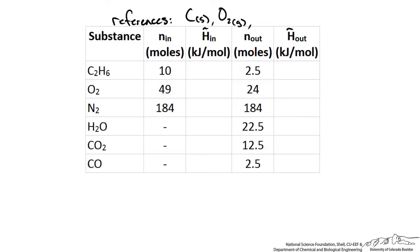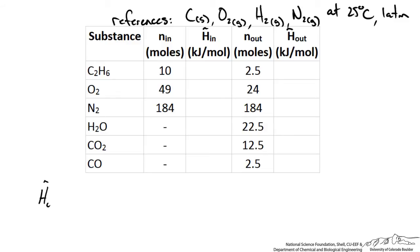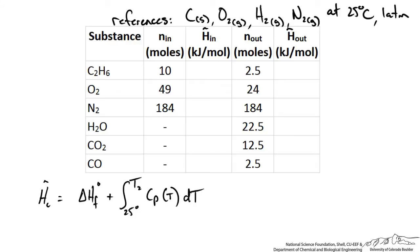To determine the specific enthalpy of a species using the heat of formation method, we take the heat of formation at the reference state of 25 degrees Celsius and add any sensible heat change from 25 degrees Celsius to the temperature that species is at. To account for this sensible heat difference, we integrate the heat capacity as a function of temperature between those two temperatures. So we have the heat of formation plus the sensible heat change, both of which can be calculated or looked up in tables.